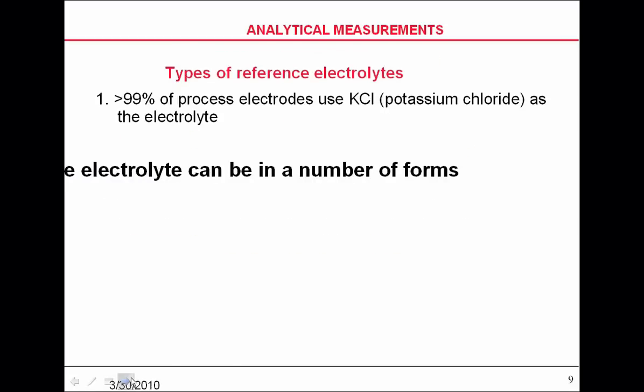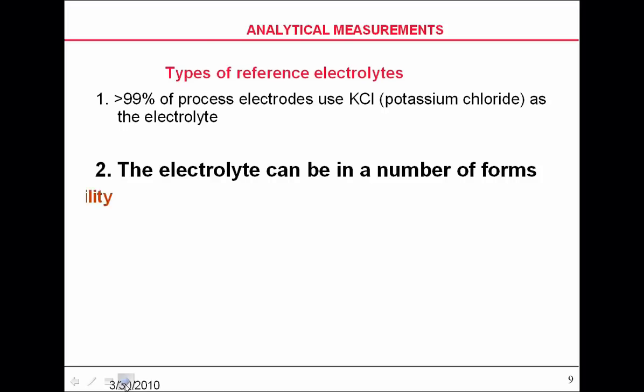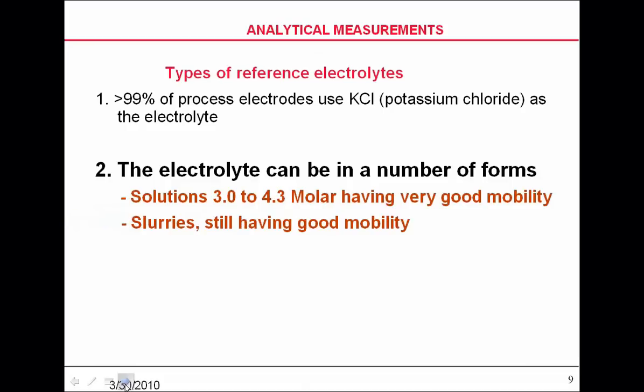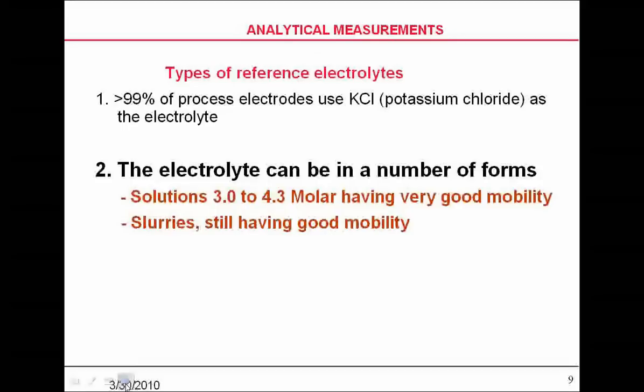About 90% of the measuring electrodes that are in the field today use potassium chloride as the reference electrode electrolyte. But there are other agents that can be used. You can use potassium chloride that's in the 3 to 4.3 mole area because it gives you good mobility.